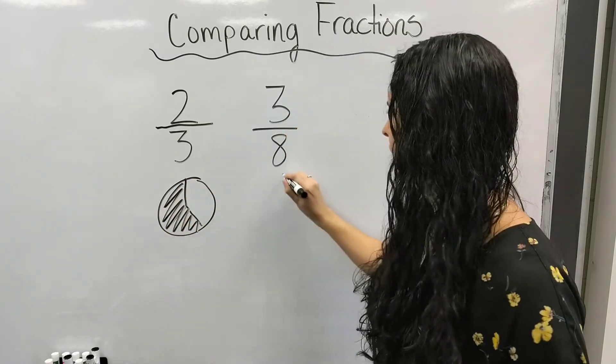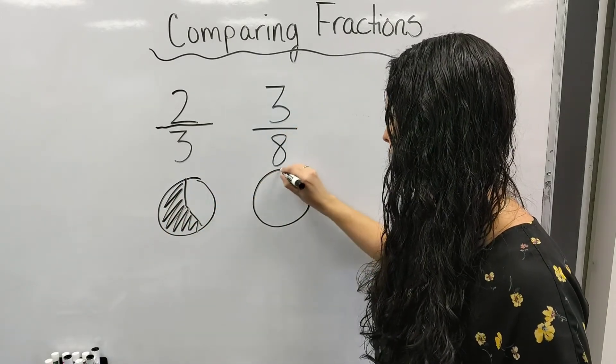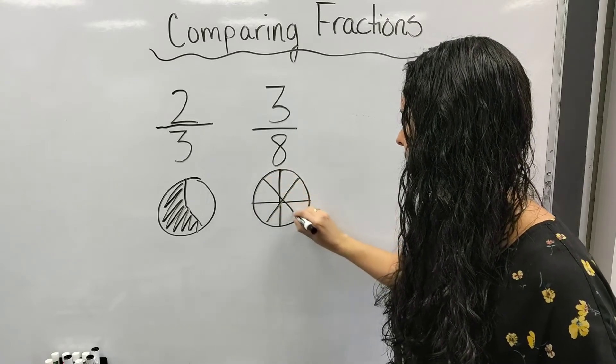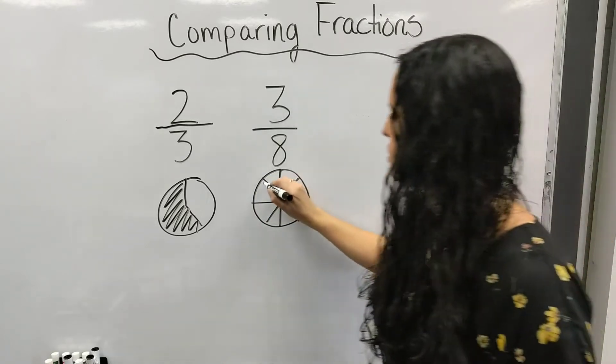One, two. Now this one I'm going to draw. I've got to have eight pieces, and I'm going to shade in just three of them. One, two, three.